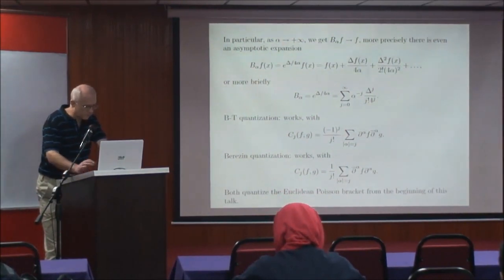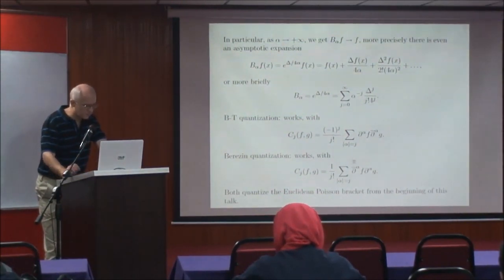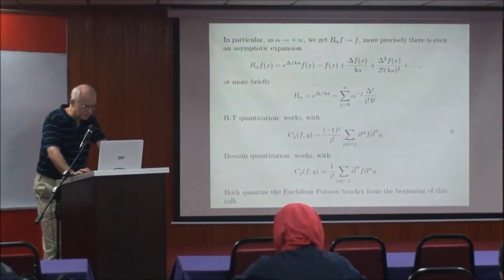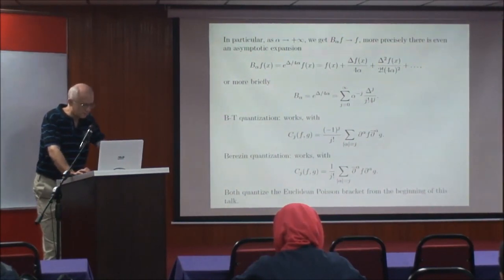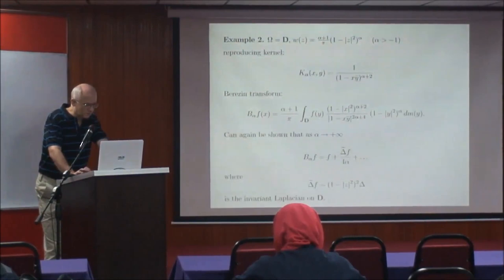Of course, both of these are quantizations of the Euclidean Poisson bracket on C^n, as we have had from the beginning of this lecture course.